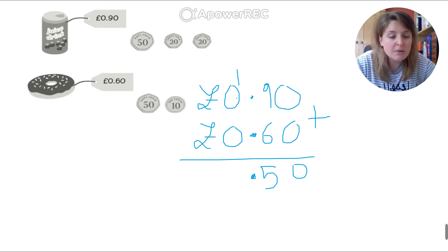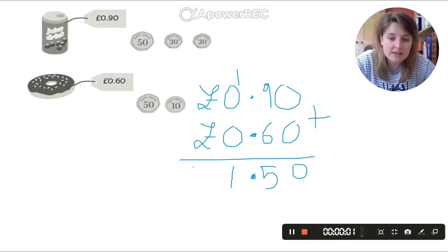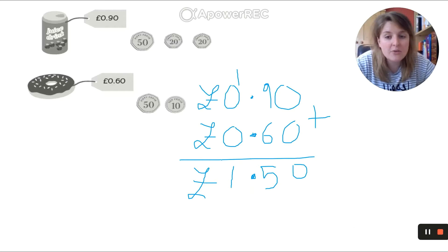Now, I have 1 plus 0 plus 0. And again, my pound sign just goes back in. Pound sign plus pound sign equals pound sign. So I am left with 90 pence plus 60 pence is £1.50. So easy.